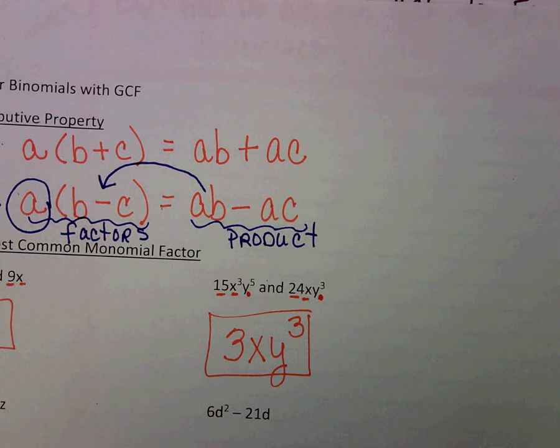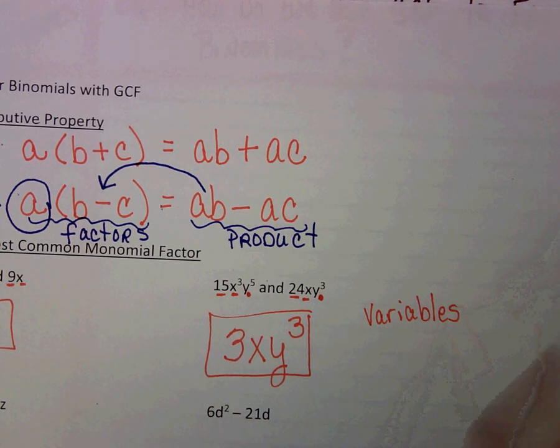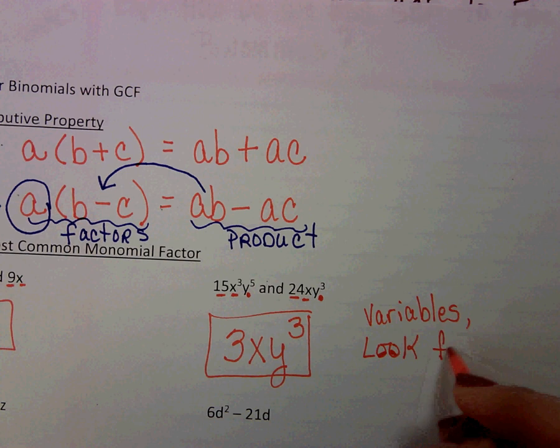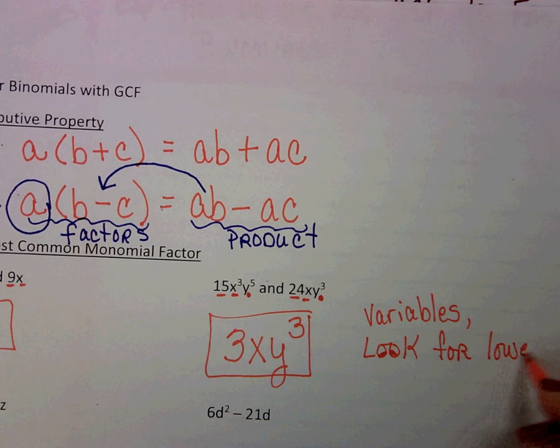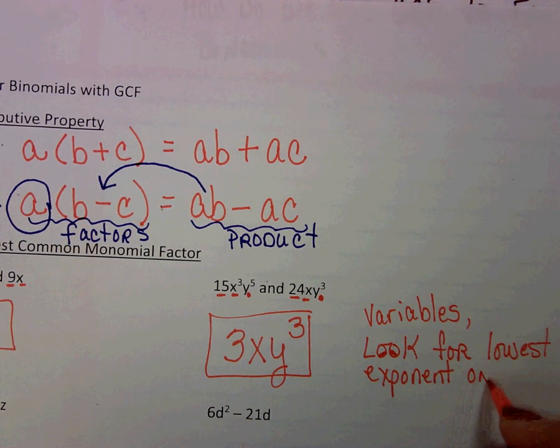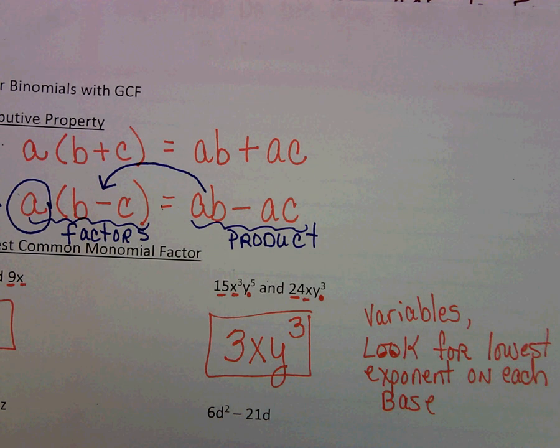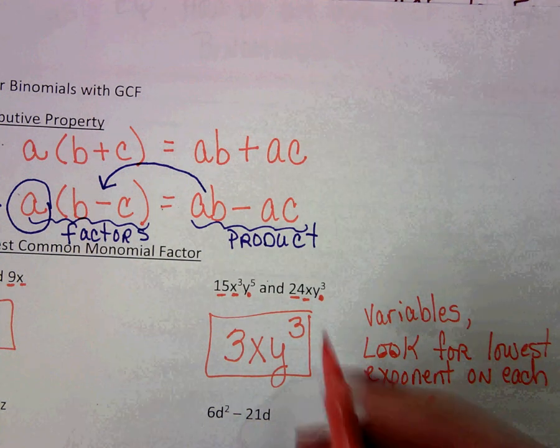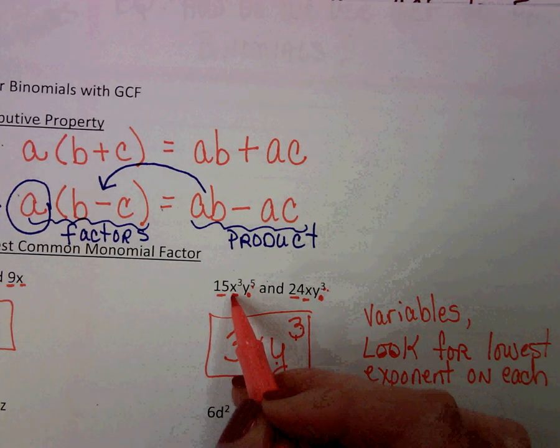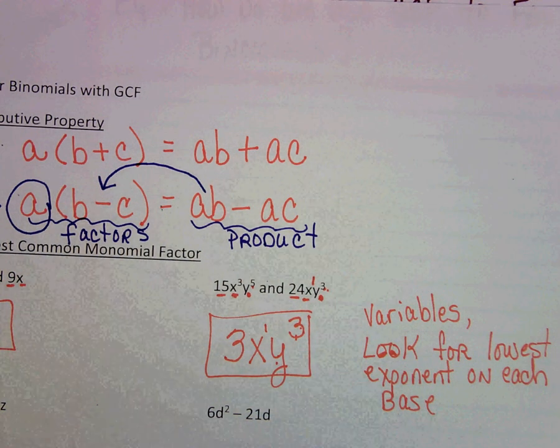What I want you to see here on the variables, look for the lowest exponent on each base. And when I say each base, when I walked you through that, we looked at the x's separately, then we looked at the y's separately. Y to the 3rd, that was the lowest exponent on my y's, so that's my GCF. My x's, x to the 3rd and x, my lowest exponent was 1. So that's why that was the GCF.